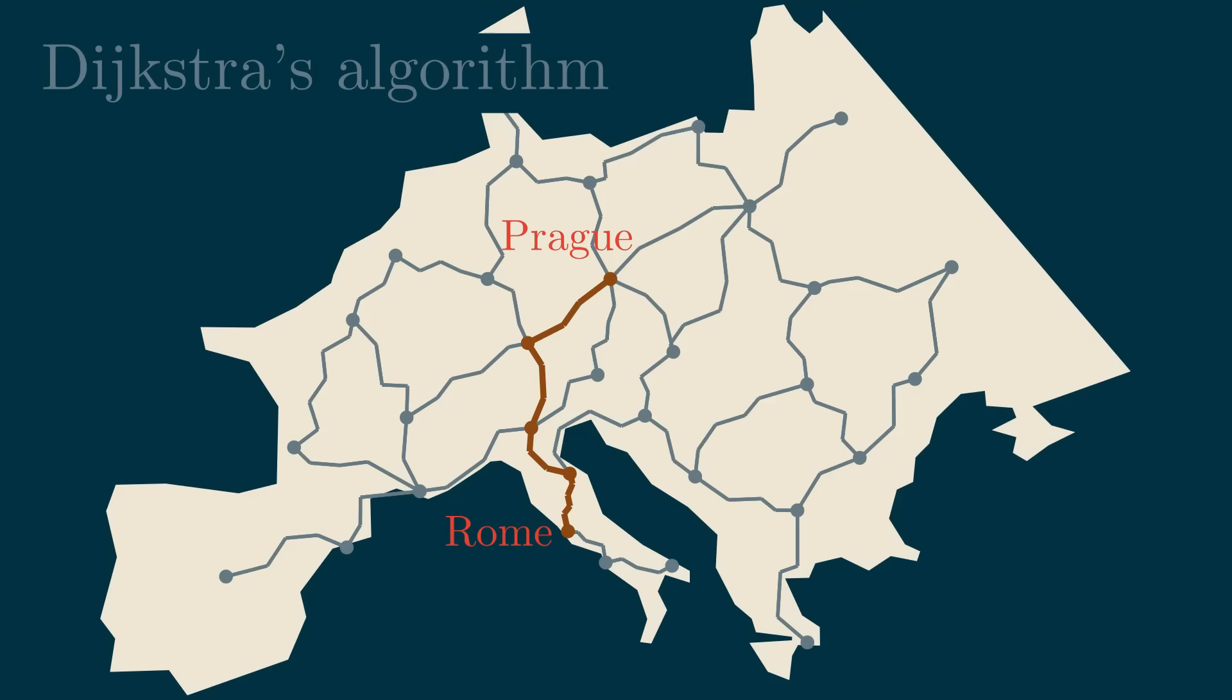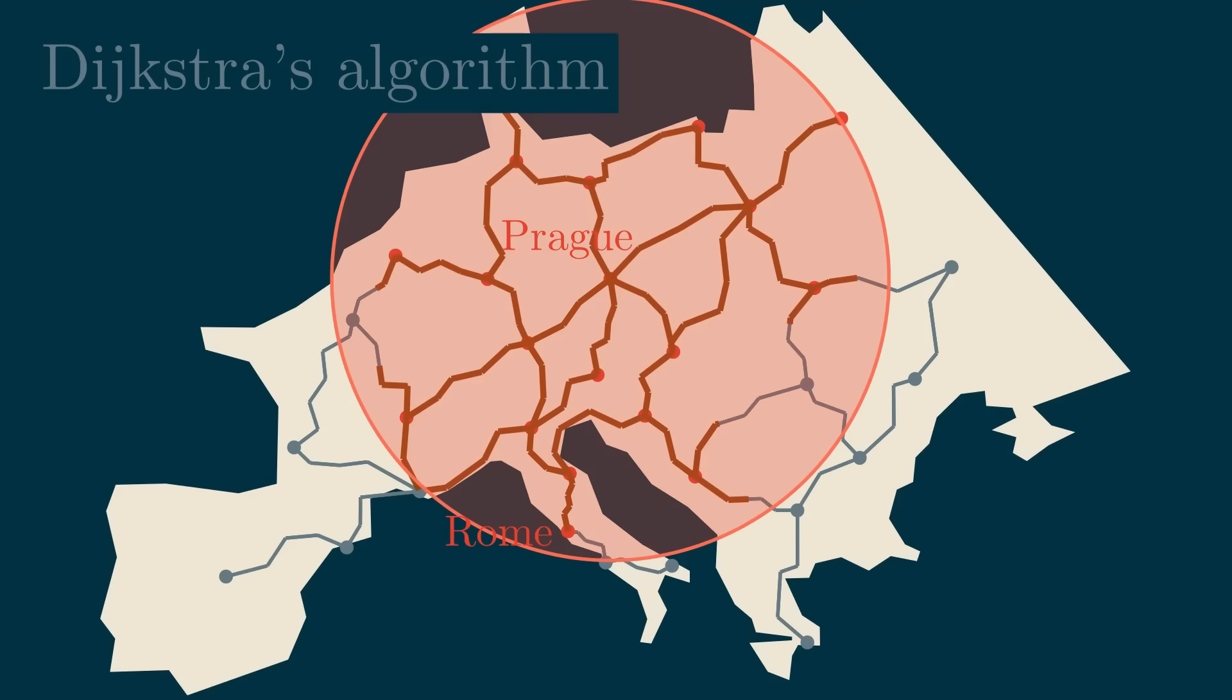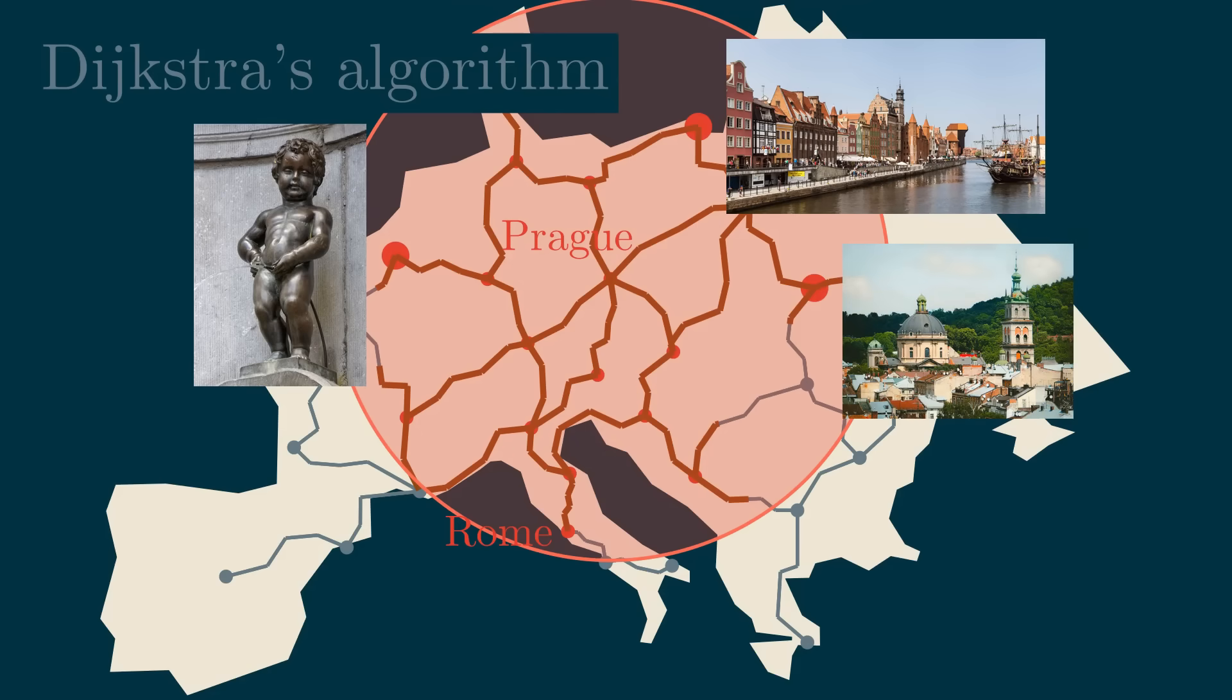Dijkstra's algorithm is certainly very nice, but before it discovers Rome, it needs to visit all other places that are closer to Prague than Rome, like Brussels, Gdańsk or Lviv. But if I asked you to find the shortest way from Prague to Rome, you probably wouldn't even consider going through these cities.